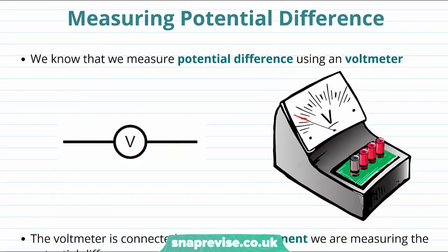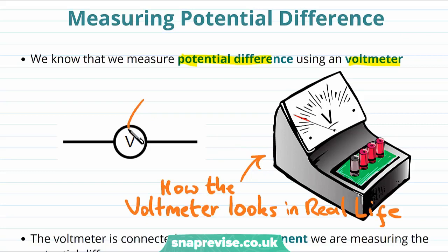So how do we measure potential difference? Well, we measure potential difference using a voltmeter. This is how the voltmeter looks in real life. And this is what the circuit component for the voltmeter looks like.